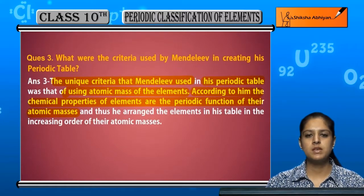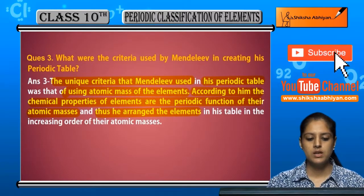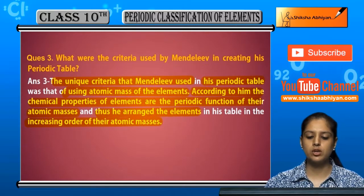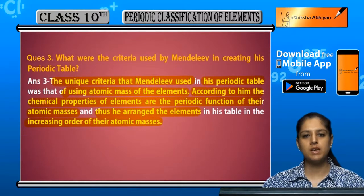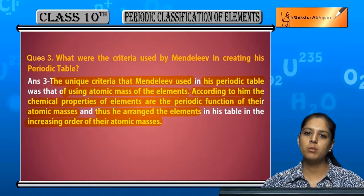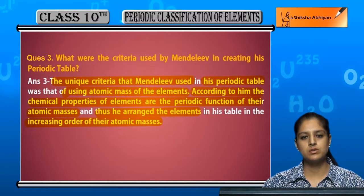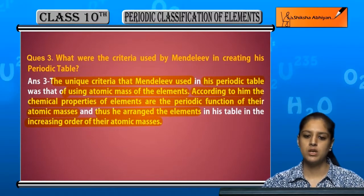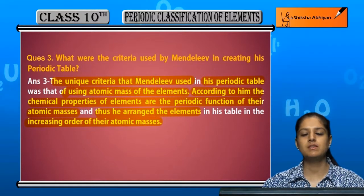He arranged the elements in the increasing order of their atomic mass. Elements were placed in the table starting from the lowest atomic mass and going up in order. This was the criteria on which Mendeleev's periodic table was laid.